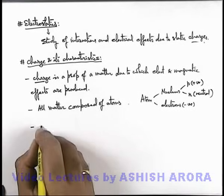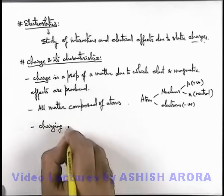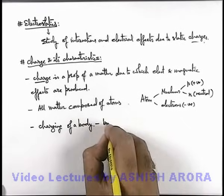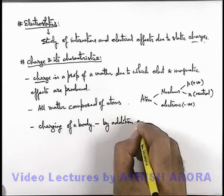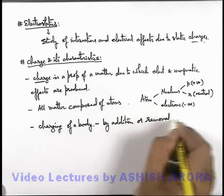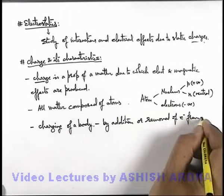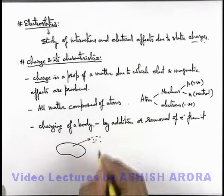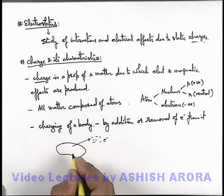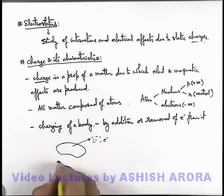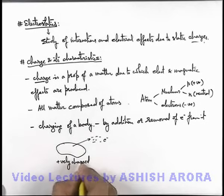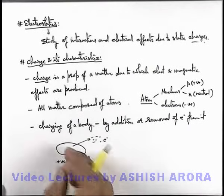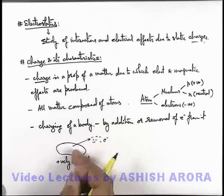And when we talk about charging of a body, a body can be charged by addition or removal of electrons from it. Like if we are having a body and if we remove some electrons from the body, and if some electrons are removed as the body is neutral, we can simply state when electrons are removed this will be positively charged. As an atom is electrically neutral and the body is made up of neutral atoms so earlier it was neutral, and if some electrons are removed from the body it'll become positively charged.